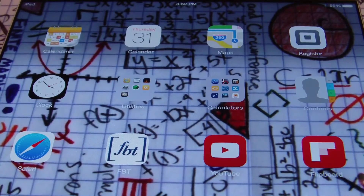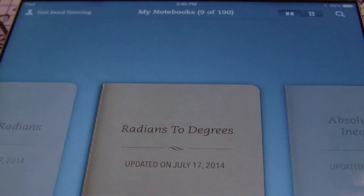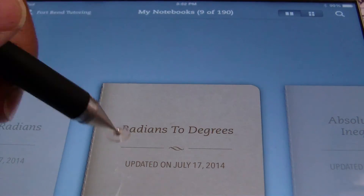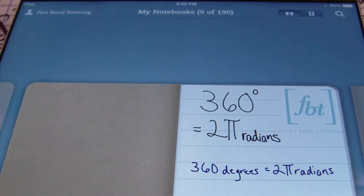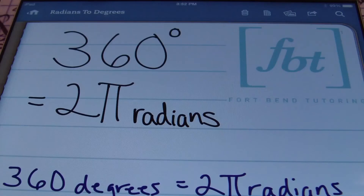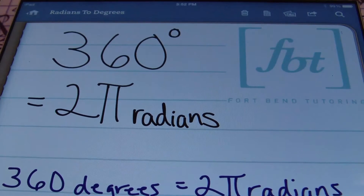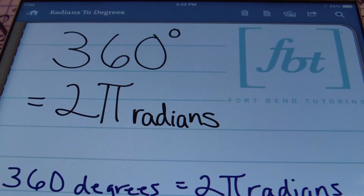Hello ladies and gentlemen, this is Mr. Witt with Fort Bend Tutoring. Today's tutorial is about converting radians into degrees. You may need this skill in a trigonometry class or an advanced geometry class, where you'll come across measuring central angles of a circle in degrees or in radians. Degrees are more familiar for most people.